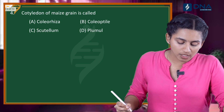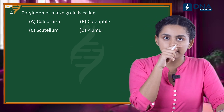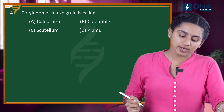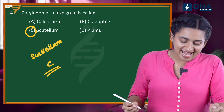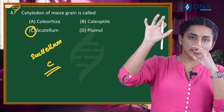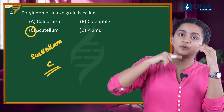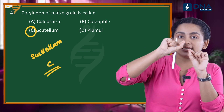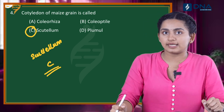Let us go to question number 4. The cotyledon of a maize grain is called what? We are going to study the NCERT picture of a monocot seed and mark its parts. The cotyledon of maize is called scutellum. So the right answer is Option C, scutellum. Other parts include coleorrhiza, coleoptile, plumule, and radicle. The plumule and radicle form the embryonal axis, which further develops into root and stem.